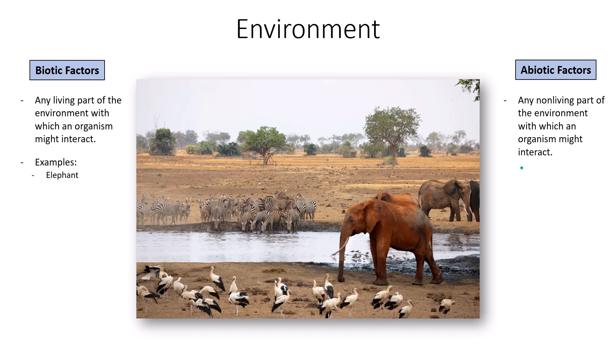When we look at this picture, the elephant is a biotic factor, the zebras are a biotic factor, the cranes are obviously alive so they are biotic factors, and the trees are biotic factors as well. The grasses — even though many are dormant and yellow — are still alive and considered biotic factors. There are also predators not shown, like a lion, which preys on the zebras — that's an interaction between biotic factors.